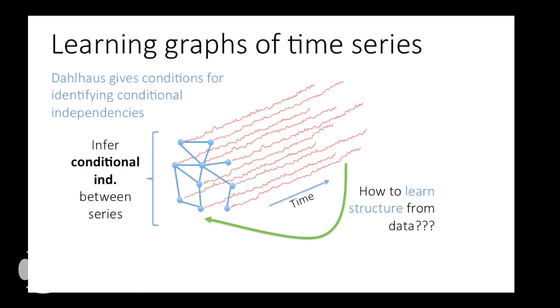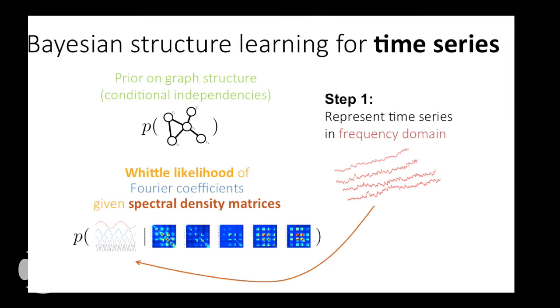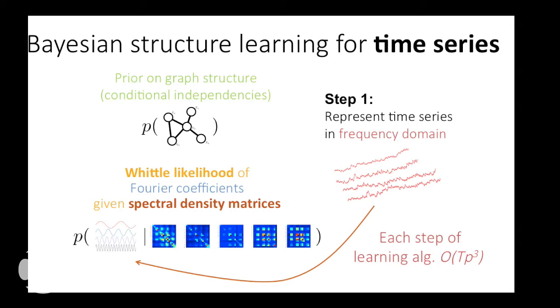Dahlhaus gives us conditions for identifying conditional dependencies from spectral density matrices. To learn this structure, we take a likelihood-based and Bayesian approach, placing a prior over graph structures. We write down the Whittle likelihood approximation of our Fourier coefficients given our spectral density matrices, and the nice thing is this likelihood decouples across frequencies. We also need a conjugate prior — which would allow us to analytically marginalize all those parameters and condition just on the graph structure. Unfortunately, that conjugate prior didn't exist in this case, but luckily Alex was able to define one, which we call the complex hyper-inverse Wishart distribution. This allows us to analytically compute the marginal likelihood of our data given just the graph structure.